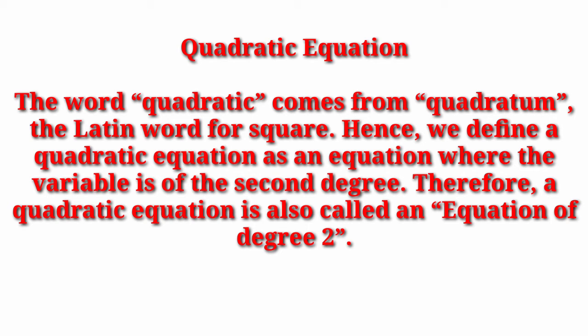First of all, quadratic equation. The word quadratic comes from 'quadratum', the Latin word for the square. Hence, we define a quadratic equation as an equation where the variable is of the second degree. Therefore, a quadratic equation is called an equation of degree 2, because degree 2 means the highest power of the equation.